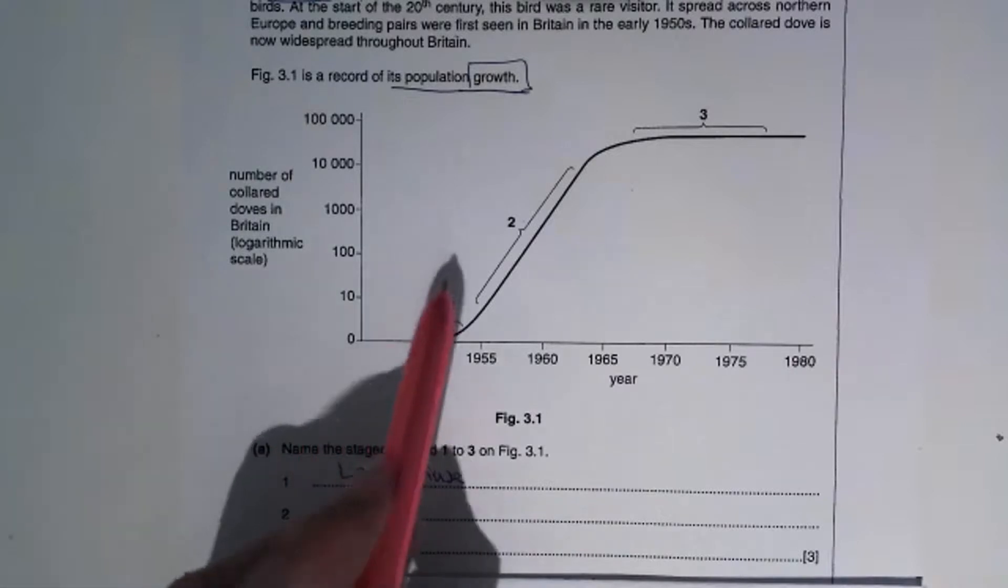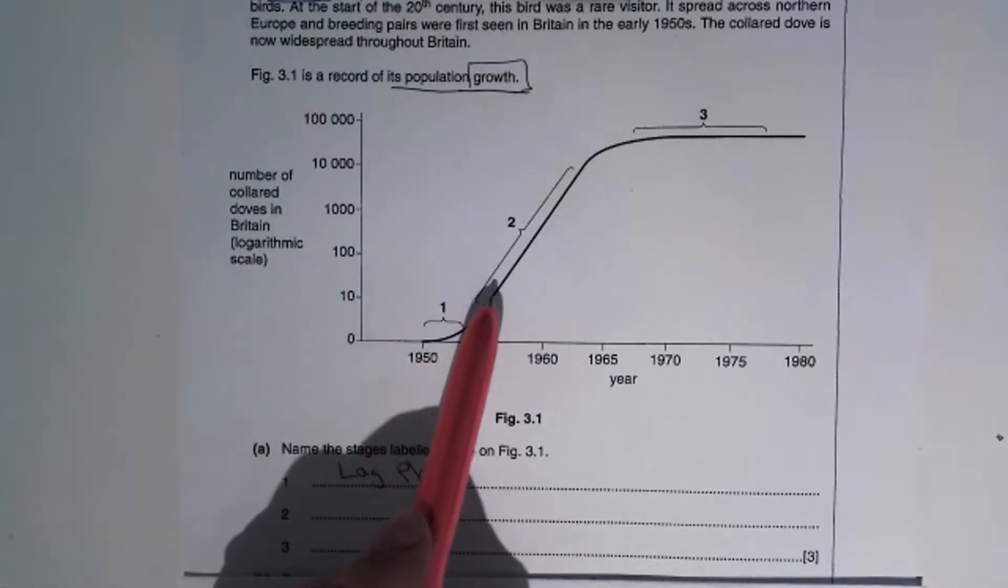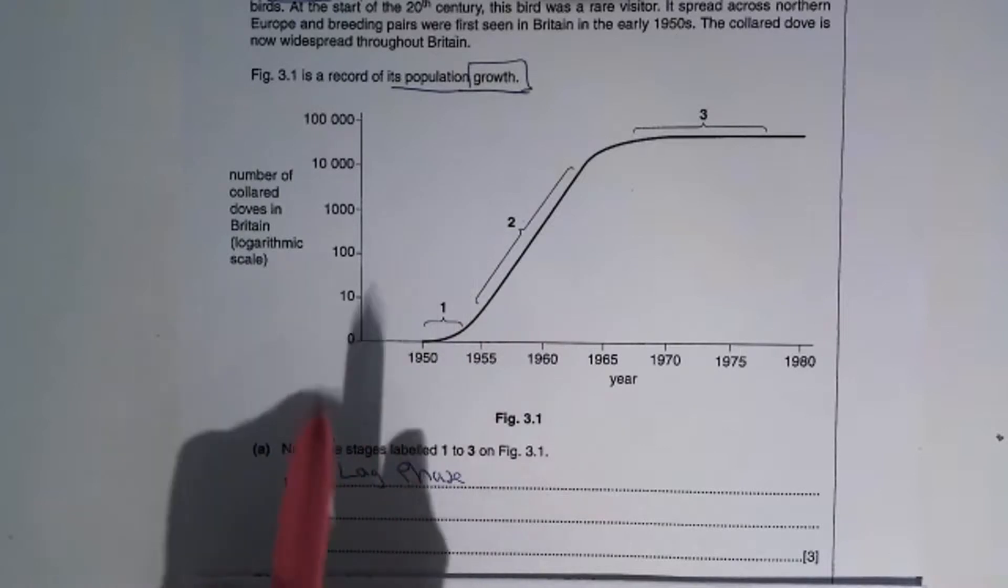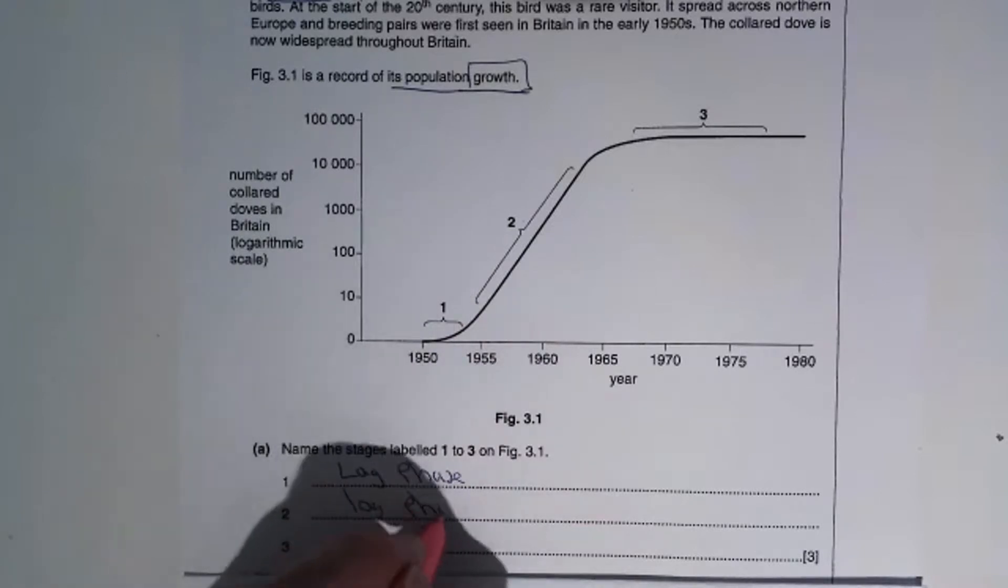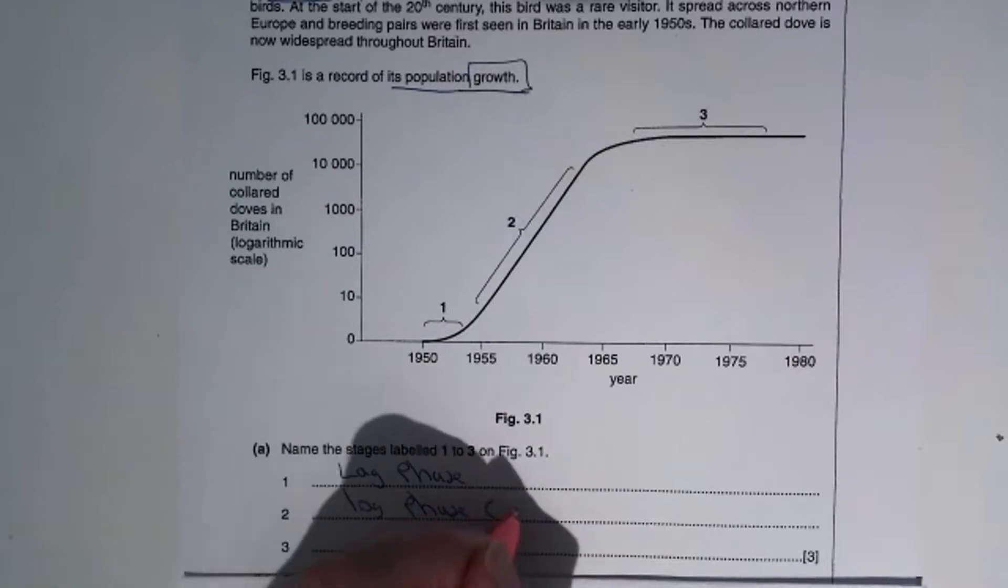Point two is when you've got maximum population growth and rapid population growth. That's the log phase. You can use the term exponential growth.